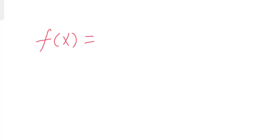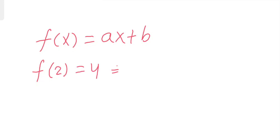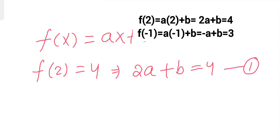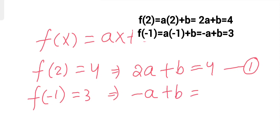So because f is linear, let's say f of x equals ax plus b. Because f of 2 equals 4, it means 2a plus b equals 4 — call this equation 1. And because f of minus 1 is given as 3, it means minus a plus b equals 3 — call this equation 2.